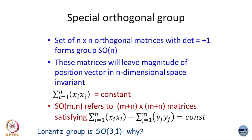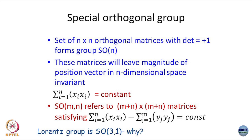The algebra of generators is left as an exercise. The set of n×n matrices with determinant +1 forms the group SO(N) and leaves the magnitude of the vector invariant, which you can formally write as sum of x_i squared. You can introduce the eta matrix so that the minus sign is automatically taken care of. SO(3,1) is the Lorentz group because ct has a different sign from x, y, z.